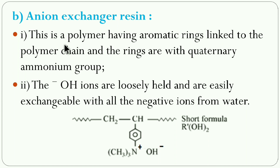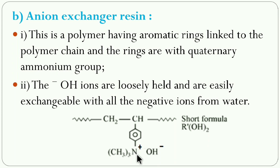Anion exchanger resins are polymeric materials containing a quaternary ammonium group. Nitrogen normally has a valency of three, but in the quaternary ammonium group it forms four bonds, carrying a positive charge. There are three methyl groups and one bond to the benzene ring. To counterbalance this positive charge, a hydroxide group is loosely bound. So OH⁻ ions are loosely bound in the anion exchanger resin, represented by the short formula R'(OH)₂.